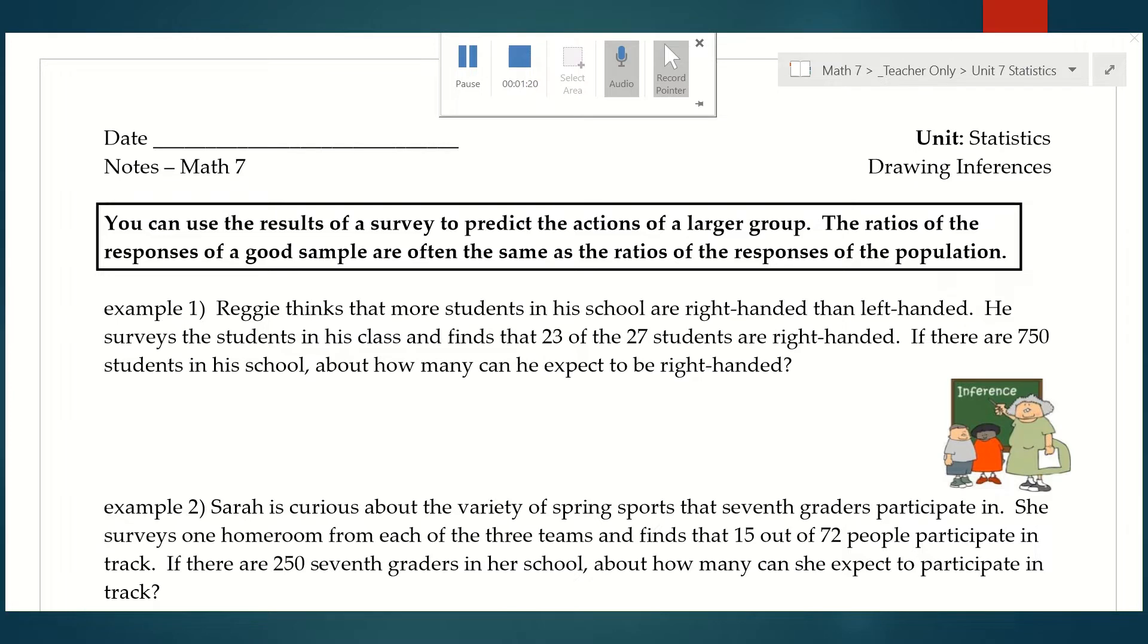We're drawing inferences based on the data and results that we got from our survey. Example one: Reggie thinks that more students in his school are right-handed than left-handed. He surveys the students in his class and finds that 23 of the 27 students are right-handed. If there are 750 students in his school, about how many can he expect to be right-handed?